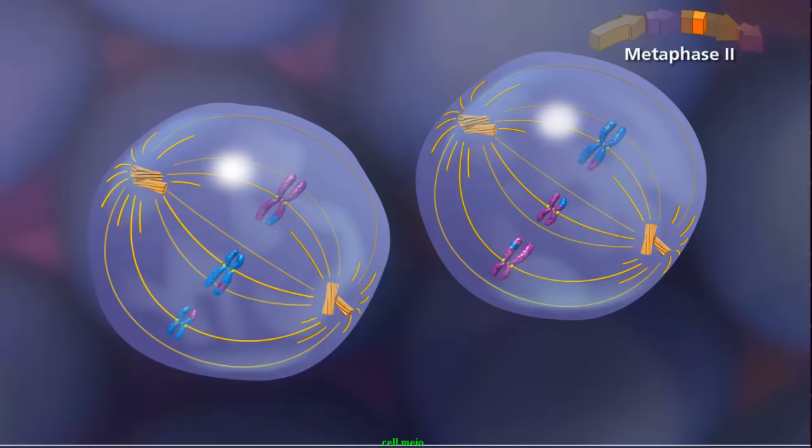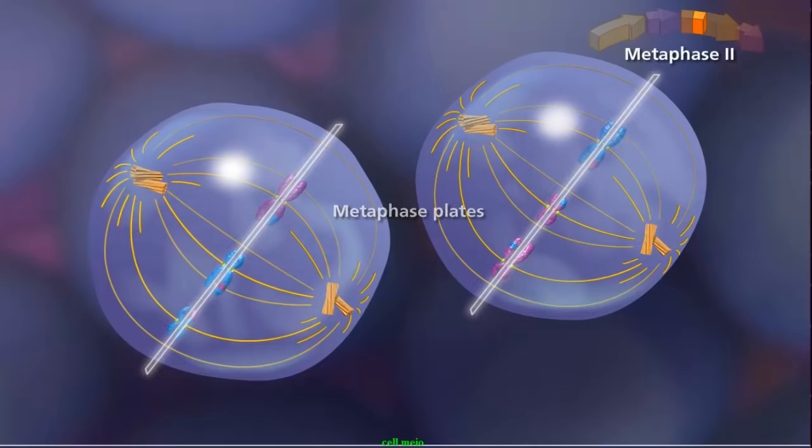The spindle aligns the sister chromatids along the metaphase plate during metaphase II.